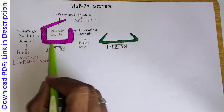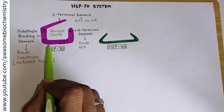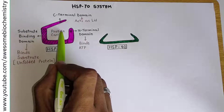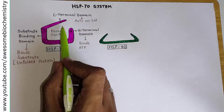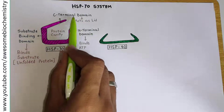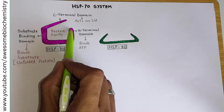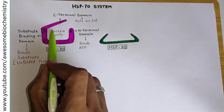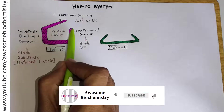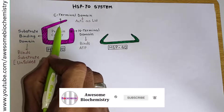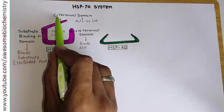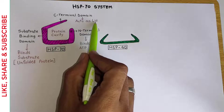The structure of HSP70 protein is such that it makes up a protein cavity. This protein cavity may be closed or it may be open — it depends on the orientation of the C-terminal domain. If the C-terminal domain falls on the N-terminal domain, then this protein cavity will be closed. And if this C-terminal domain goes away from the N-terminal domain, as shown in the diagram, this protein cavity remains open. So we can say that the C-terminal domain acts as a lid.